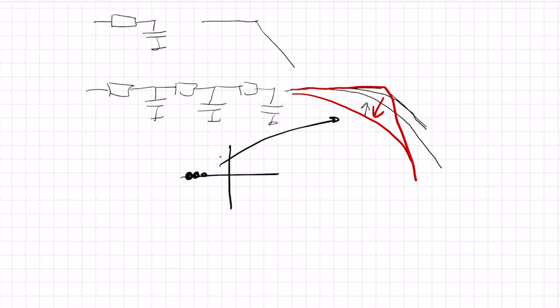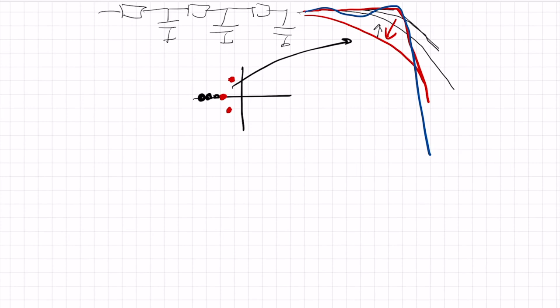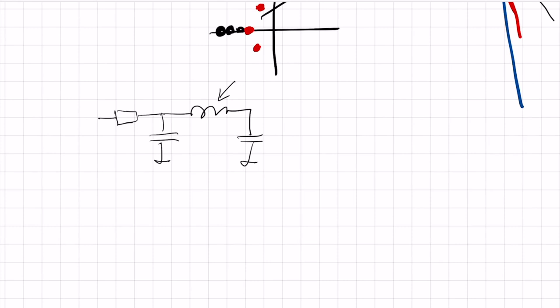A third-order filter with two complex conjugate poles and one real pole can produce a much steeper response. But just with passive resistors and capacitors, complex poles are impossible — we need inductors. These more complex LC filters were very popular in the 1930s and 40s. However, at megahertz frequencies, inductors become so large that they cannot be put on a chip — they must go off-chip, which is not practical. We prefer fully integrated solutions, and that's why we use active filters that behave as if they contain inductors.